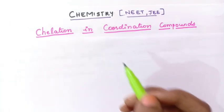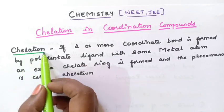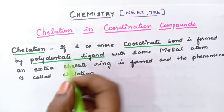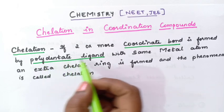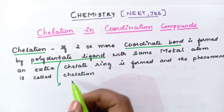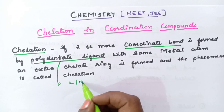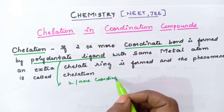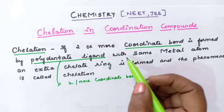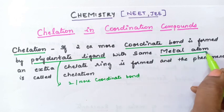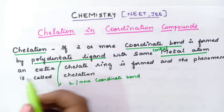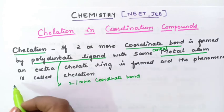So students, what is the meaning of chelation? Chelation is nothing but when two or more coordinate bonds are formed by a polydentate ligand. A polydentate ligand is a ligand which can form two or more coordinate bonds with the same central metal atom. An extra chelate ring is formed, and the phenomenon is called chelation.